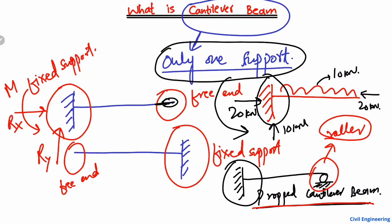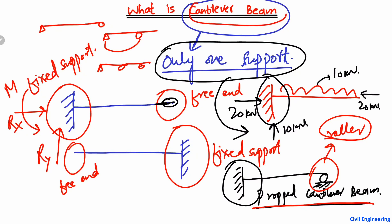All other types of beam — for example, the simply supported beam has only a roller and hinge support; the overhanging beam always has two supports; and the continuous beam has more than two supports — while the cantilever beam has only one support. This is the main difference between the cantilever and other types of beams. Hope you guys understand, and don't forget to subscribe to our channel. Thank you for watching.